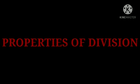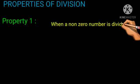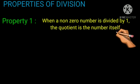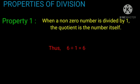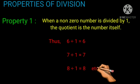Now the next topic is properties of division. Property 1: When a non-zero number is divided by 1, the quotient is the number itself. For example, 6 divided by 1 equals 6, 7 divided by 1 equals 7, and 8 divided by 1 equals 8.